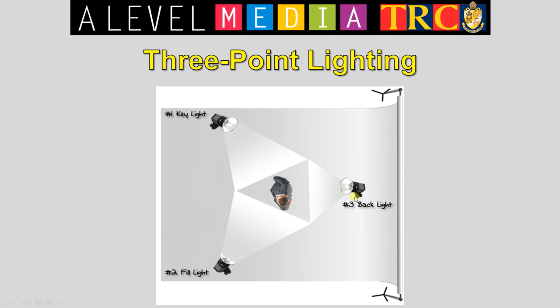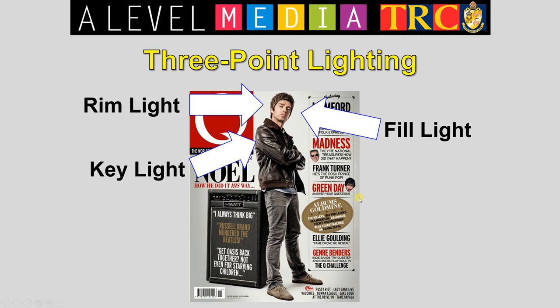Obviously you can find three-point lighting tutorials on YouTube pretty easily — I can also send you some links to those when we get further to the point. Look at this picture here: Noel Gallagher — key light coming from this direction; look at the way the highlights are reflected on that part of his body. Fill light coming this way to just get rid of a bit of shadow. Rim light behind him to give us that kind of glow behind his head.